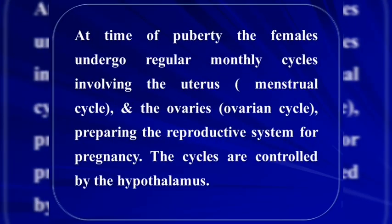Each normal female has two cycles. The ovarian cycle prepares the mature Graafian follicle to give the oocyte for fertilization and formation of the embryo. The other cycle is the menstrual cycle, which prepares the endometrium for implantation if there is fertilization. At the time of puberty, the female undergoes a regular menstrual cycle, and in the ovary there is the ovarian cycle preparing the reproductive system for pregnancy.